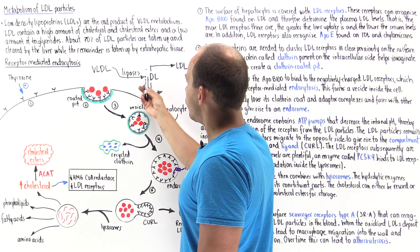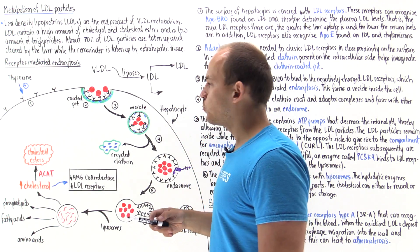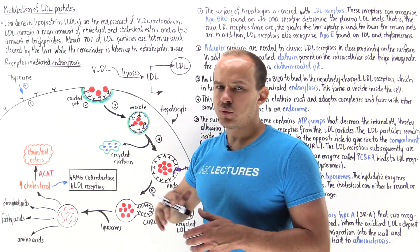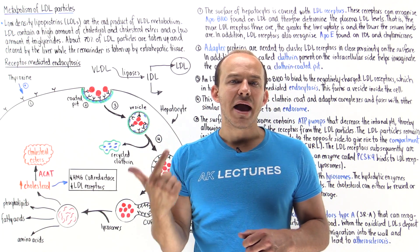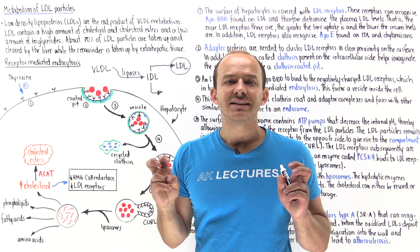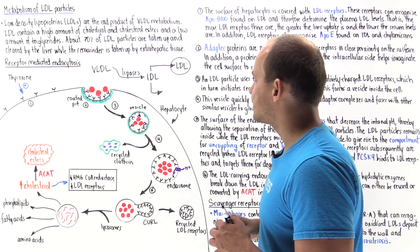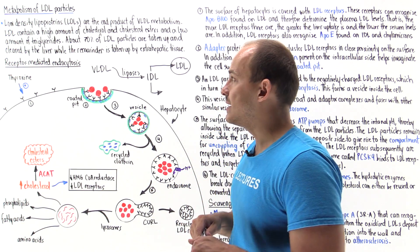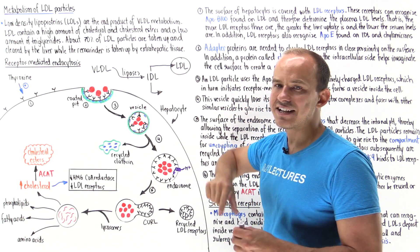As we remove more and more triglycerides from the IDL and exchange some apolipoproteins, we form LDL. The LDL, out of all of these lipoproteins, contains the lowest amount of triglycerides and the highest amount of cholesterol and cholesterol esters. For this reason, LDL is considered the bad cholesterol, the bad lipoprotein. About 70% of LDL under normal conditions is absorbed and cleared by the liver, and the remainder is taken up by extra-hepatic tissue.